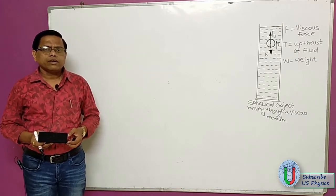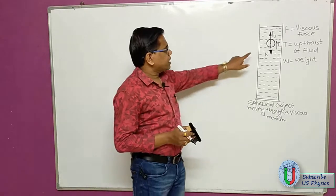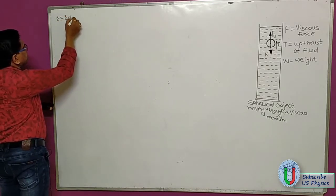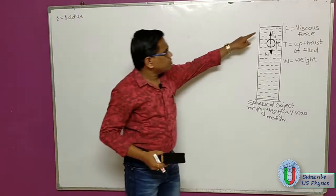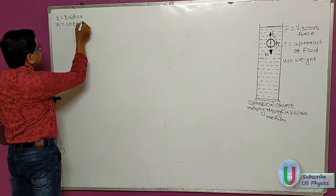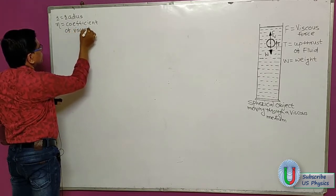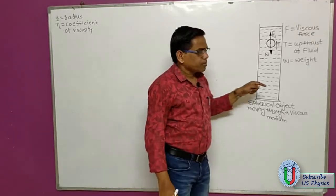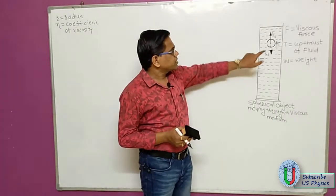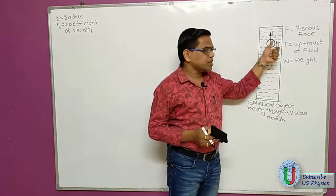We will derive the expression for terminal velocity of a spherical object falling through a viscous medium. Consider a sphere of radius R falling through a liquid whose coefficient of viscosity is η. So R is the radius of the sphere, and η is the coefficient of viscosity of the viscous medium. When this spherical object falls through this medium, it will be acted upon by certain forces.